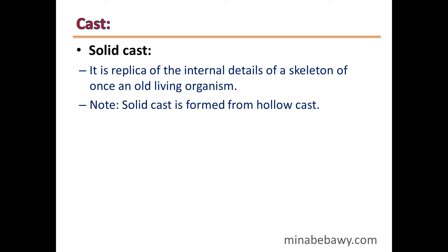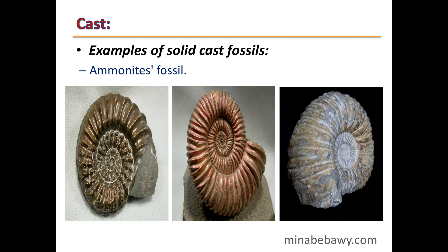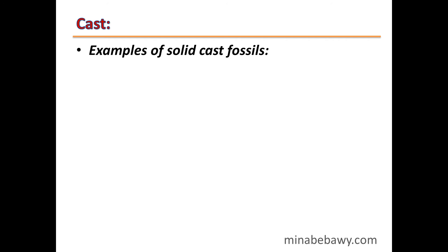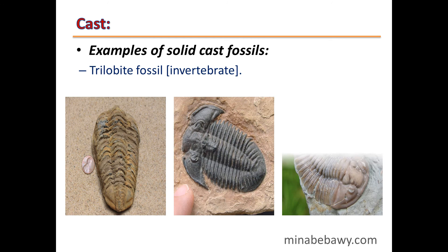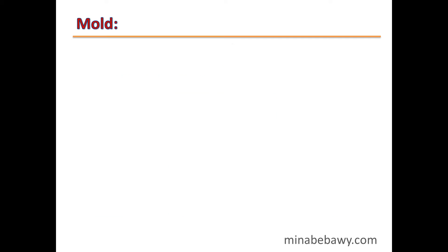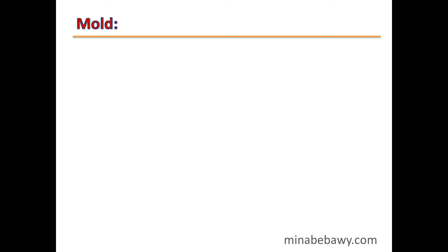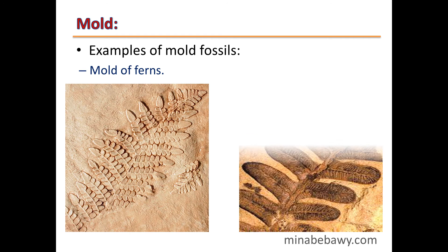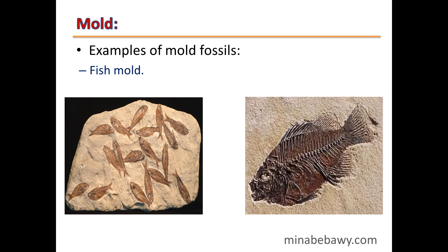Solid cast is formed from a mold. Examples of solid cast fossils include ammonite fossils, mammoth fossils, and nummulite fossils. The trilobite fossil is an example from an invertebrate animal. Mold is the replica of the external details of a skeleton of an old living organism. Examples of mold fossils include mold of ferns and fish mold.